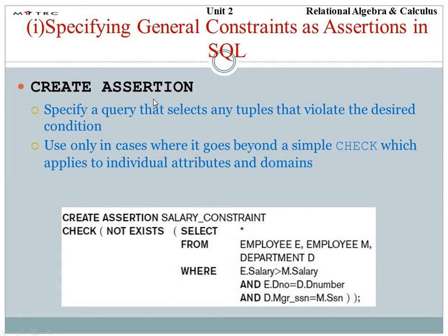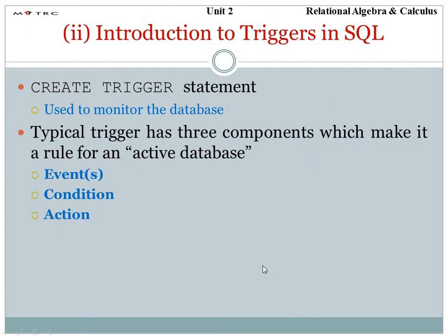Now let's see the two commands properly in SQL. The first is create assertion. We have to write a query to select the tuples which will violate a given condition. If we have a condition in the query, then we will use the create assertion command. We use it only in cases where it goes beyond a simple check — when the check condition is not working, we go to create assertion. Looking at the syntax: create assertion, then a salary constraint check, and then we define the query.